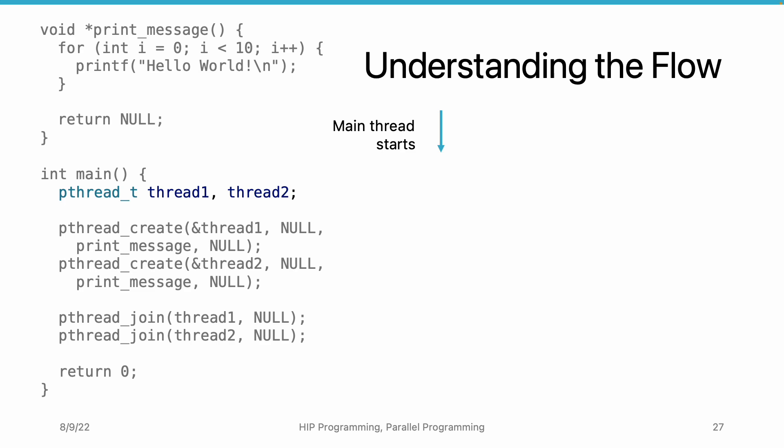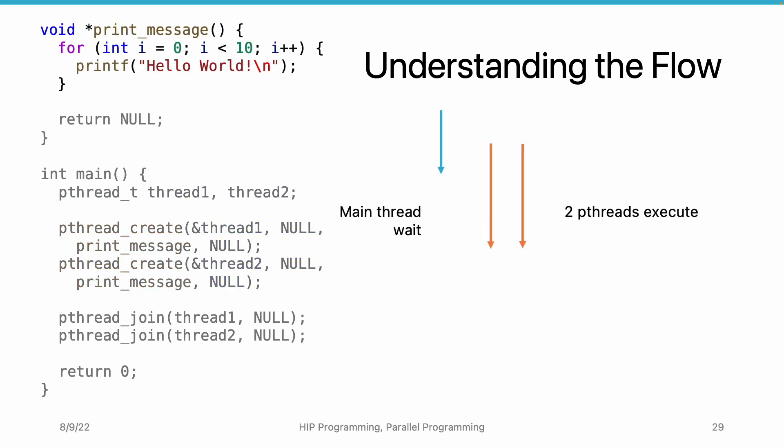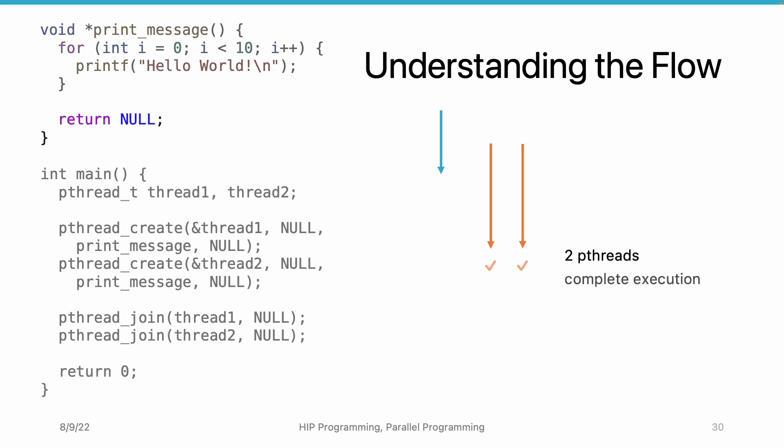First, when we execute the first line, the main thread starts. Currently, we only have one thread in the process. When we create the pthreads, two threads are created and run independently. As the main thread waits for the threads to complete execution, these two threads run the same function in parallel. After printing all the lines, these two threads arrive at the return line. In the CPU, they do not have to be synchronized — it is very likely they arrive at different times. Finally, after the threads complete execution, the main thread can pass the pthread_join calls and finish its own execution.